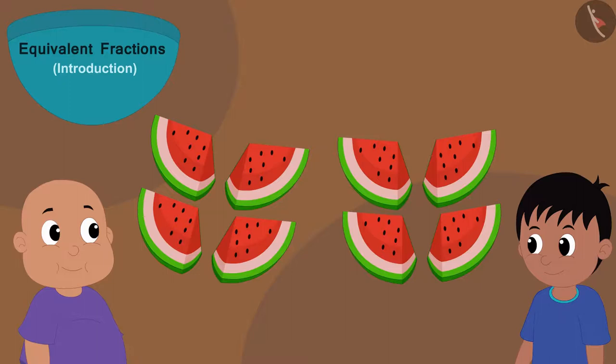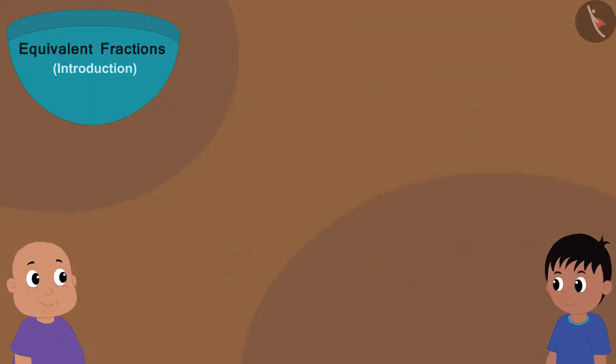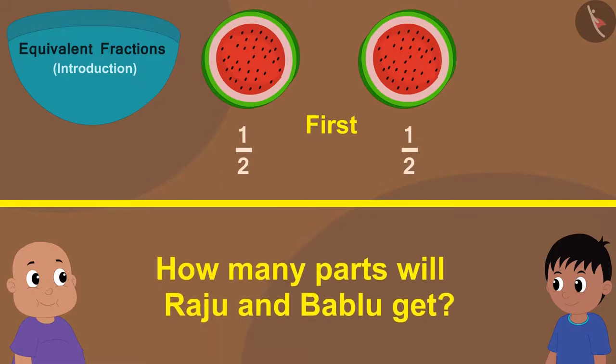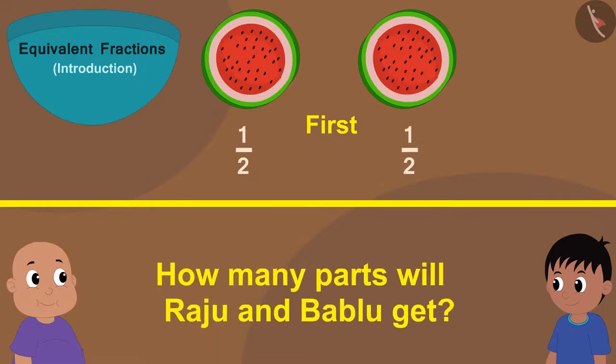And children, you can see, right? All these eight parts are exactly the same. Now, if they have to take as much watermelon as before, that is, half watermelon, how many parts will Raju and Bablu get?